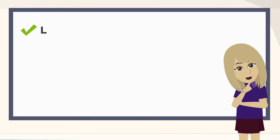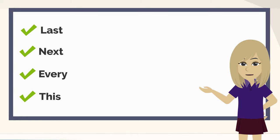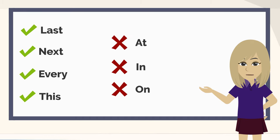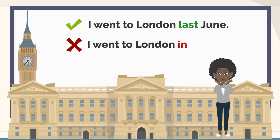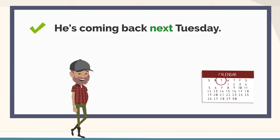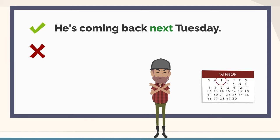When we say 'last', 'next', 'every', and 'this', we do not also use 'at', 'in', or 'on'. For example: I went to London last June — not 'in last June'. He's coming back next Tuesday — not 'on next Tuesday'.